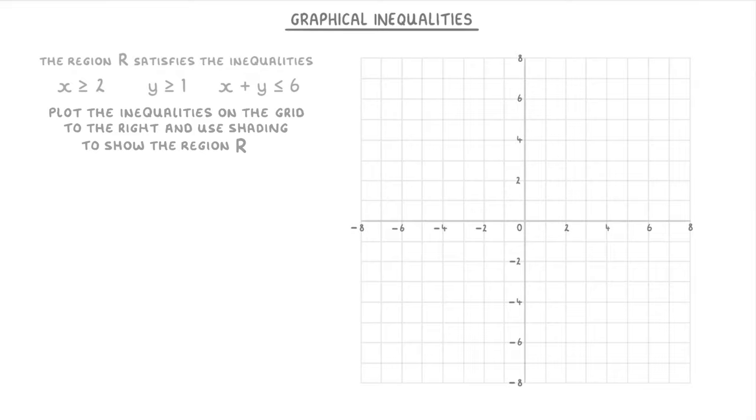So the first thing that we want to do here is draw out our lines with their little arrows on. So x equals 2 with arrows to the right, y equals 1 with arrows upwards, and x plus y equals 6 with arrows downwards. And now that we have all of our inequalities we just need to find the region that satisfies all of them. So to the right of x equals 2, above y equals 1, and below x plus y equals 6. And now that we've found it we just shade it in and we're done.